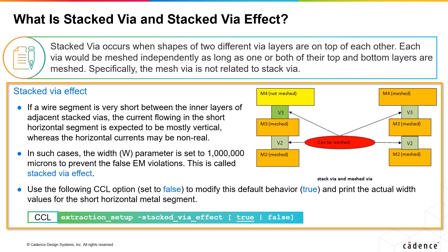The use model of the parameter is: when set to default true, it reports the width parameter as 1 million microns. When set to false, it reports the actual wire width for the short horizontal metal segment.